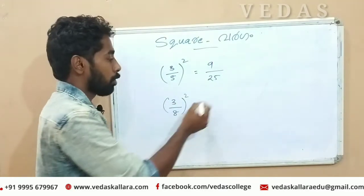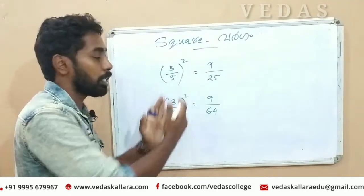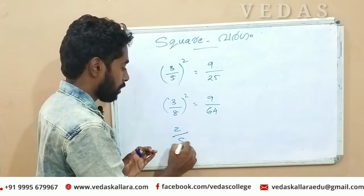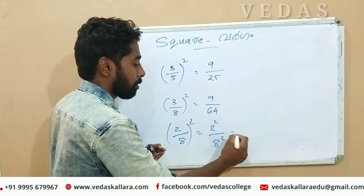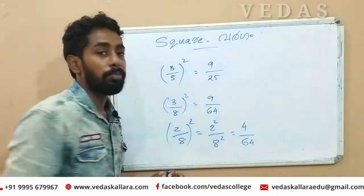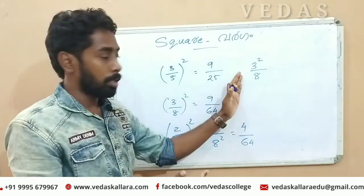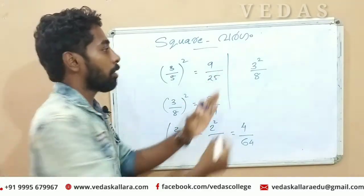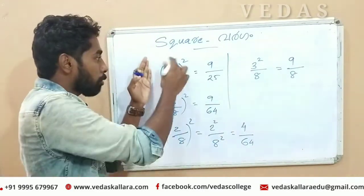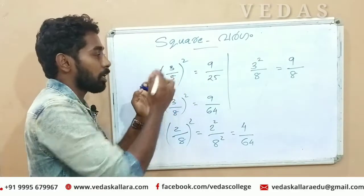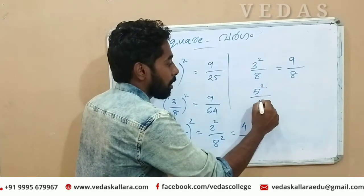3 by 9. 4 by 8 — we will put a bracket and put a bracket. 2 by 8. 4 by 64. We will put a bracket and put a bracket — 3 by 8. 3 by 9. We will put a bracket at 1. We will put a bracket at 2. 5 by 8 and 5.